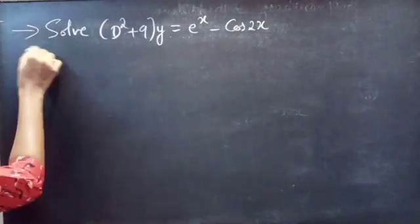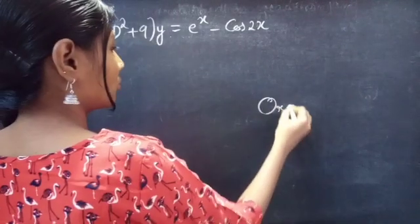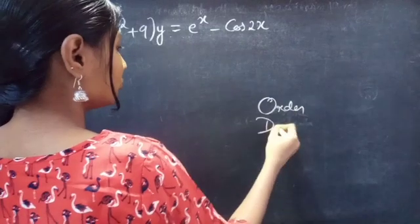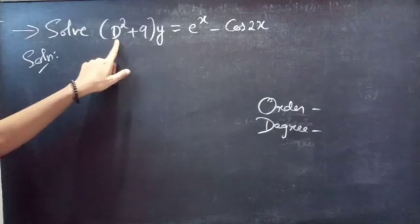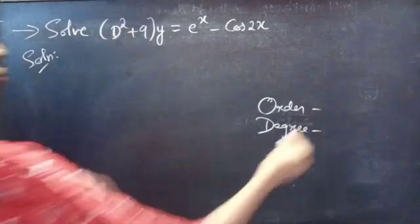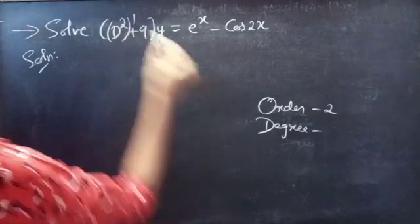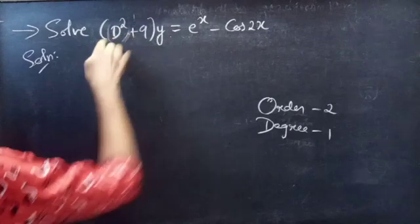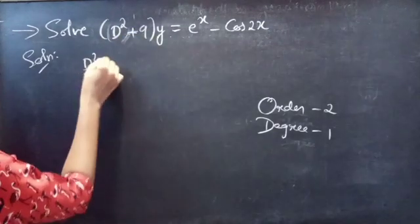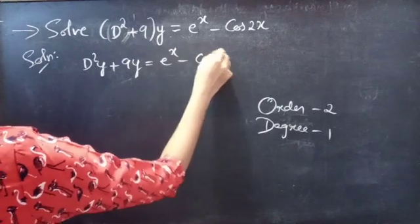Solution. Firstly, let's find the order and degree of the given differential equation. The highest derivative here is D², so order will be 2, and the highest power of the highest derivative is the degree, which is 1. We can write the given differential equation as D²y + 9y = e^x − cos 2x.